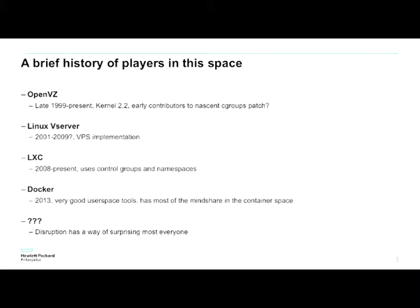LXC takes the control groups and namespaces technologies and puts some nice user space tools for managing, creating, and destroying containers. And then along came Docker. Docker didn't really introduce anything new technologically — the underlying bits and pieces are still namespaces and control groups. But Docker came along with some really good user space tools and this idea of being able to share container images very easily. There's an image registry for Docker — you can say 'docker pull debian' and it'll pull down a Debian image and you can get going quite quickly. Their innovation was just being able to get started very quickly and having a shared image repository.